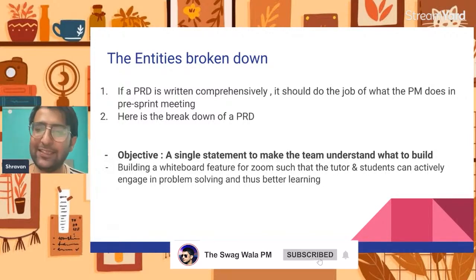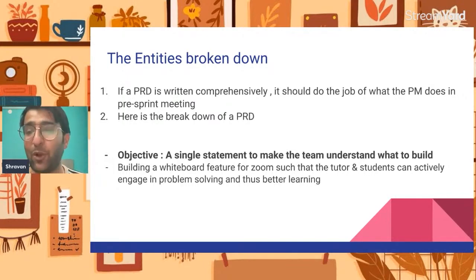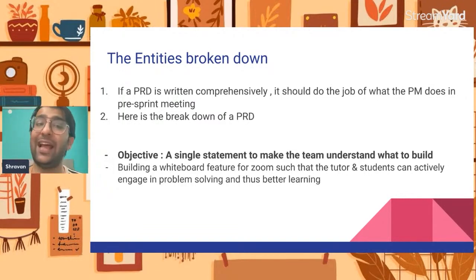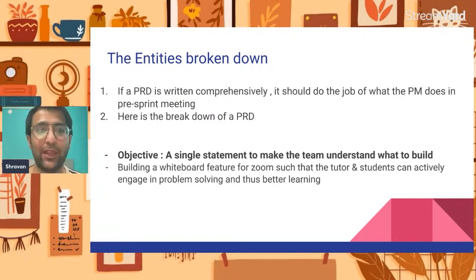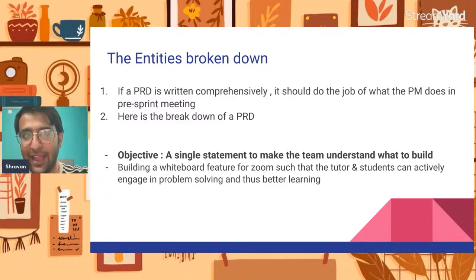The typical breakdown of a PRD starts with the objective statement. The difference between a business objective and a product objective is that a business objective is far more revenue, cost, and profit driven, whereas a product objective is far more towards the experience of the user or the solution or the feature that you are making. In a product objective, we write what the end user should do.